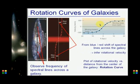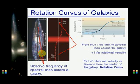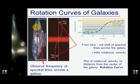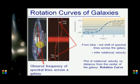You can determine the rotation curve of a galaxy using redshifts. You can measure a redshift or blueshift for different parts of the galaxy — the redshift indicates the part of the galaxy moving away from you, and the blueshift indicates the part moving towards you. This way you can know the rotation curve as a function of distance from the center of the galaxy.